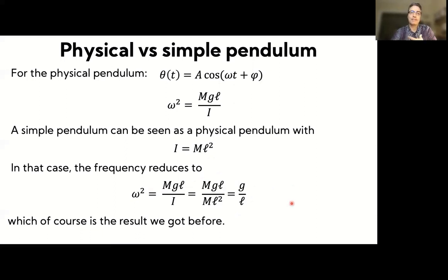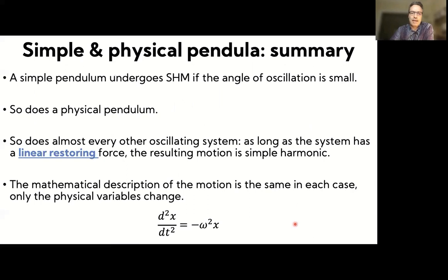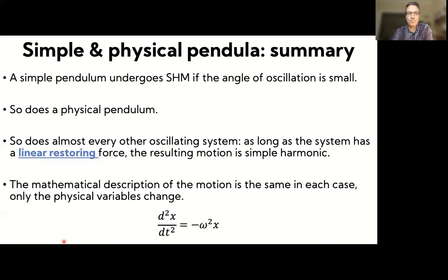In summary, both the simple pendulum and the physical pendulum undergo simple harmonic motion for small oscillations, because of the small angle approximation. In fact, this is true for almost every other system: as long as there is a linear restoring force — a force that tries to restore equilibrium and is linear in the displacement, whether x or theta — the resulting motion is simple harmonic.